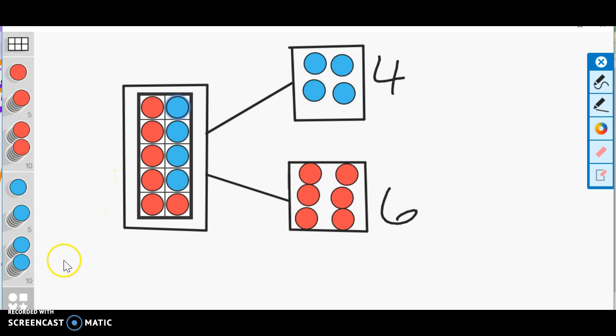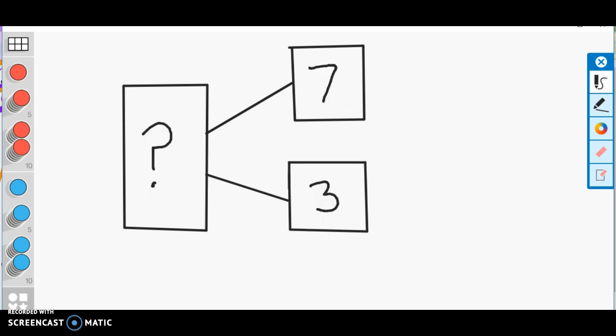Now let's try to do a number bond without any kind of counters. Here's our number bond where we are only using numbers to represent our part-part-whole. Now we have the part of seven and the part of three, and our job is to discover what the whole could be.